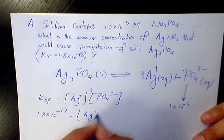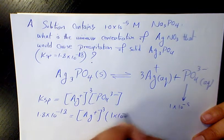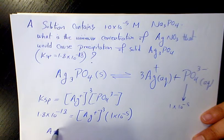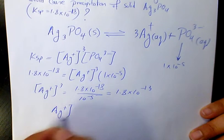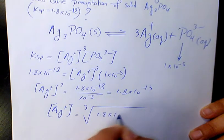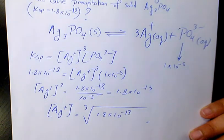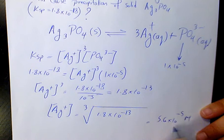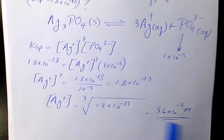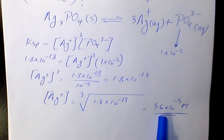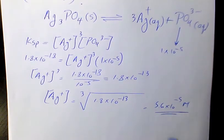The concentration of phosphate is 1×10⁻⁵. So [Ag⁺]³ will be 1.8×10⁻¹⁸ divided by 10⁻⁵, which is 1.8×10⁻¹³. So the concentration of Ag⁺ is going to be the cube root of 1.8×10⁻¹³. When you calculate it, that's going to be 5.6×10⁻⁵ molar of silver ion. So any concentration more than this is going to result in precipitation.